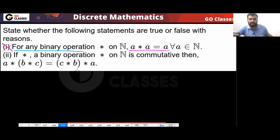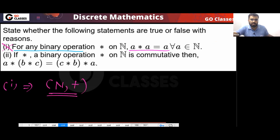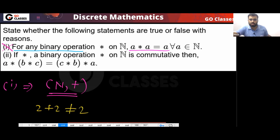What is the counter-example? You can take the set of natural numbers with addition. For example, what is 2 plus 2? This is not the same as 2. So this example works as a counter-example.